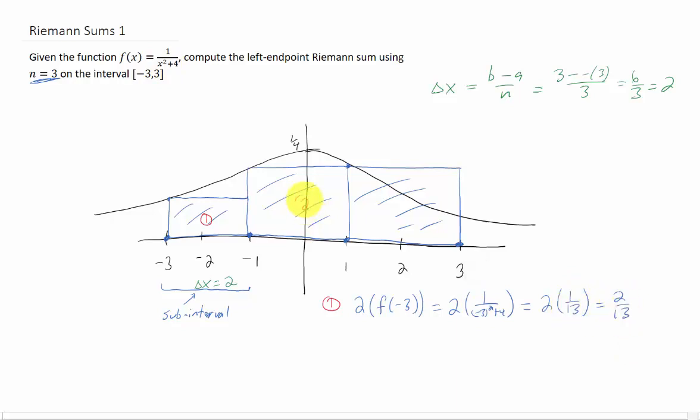How about rectangle 2? Well, the area of this rectangle is 2. That's the base. The height is the function value at x equals negative 1. So that's 2 times f of negative 1, which if we do just a bit of algebra is going to give us 2 fifths. The area of the third rectangle is going to be the base. That's 2 times the height of this rectangle, which is the function value at 1. Which you can see from the picture is going to give you the same results as the area of the second rectangle.